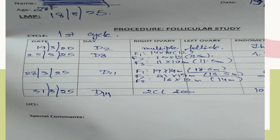Suppose the patient has come to you — she is a 28-year-old female, her LMP is 18th March. We always keep a track of how many cycles the patient has taken and we will note if she is taking any IUI also. But in this case, the patient was trying only naturally. We have a small chart at our center and we always mention the date.